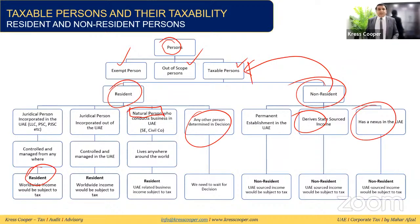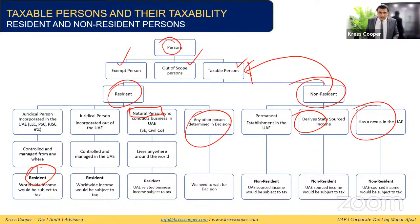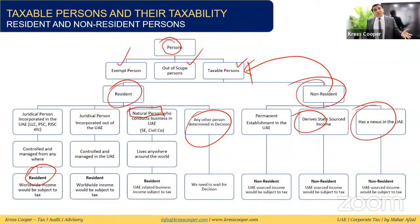To summarize: any person outside the UAE with no presence, no PE, and no UAE-sourced income is considered out of scope. Otherwise, every company in the UAE, individual earning business income, and branches of foreign companies as PEs will be subject to tax. A person sitting outside the UAE but earning UAE-sourced income will also be subject to tax.